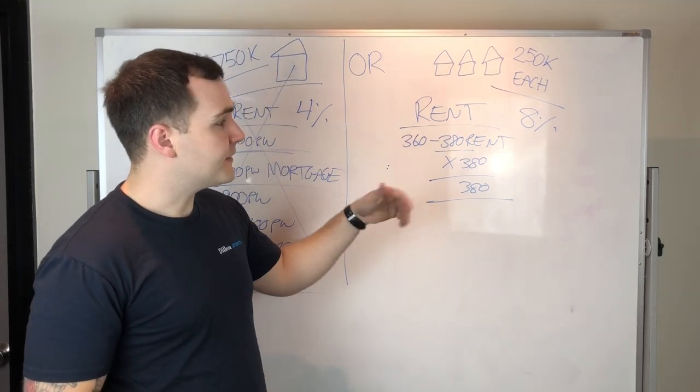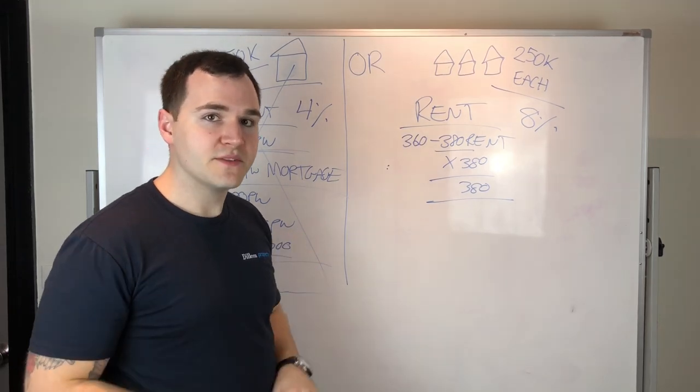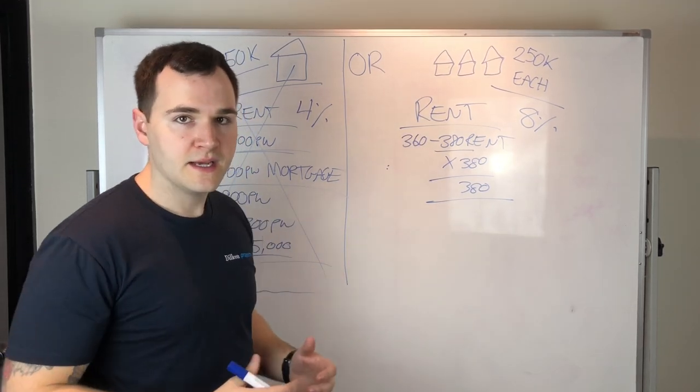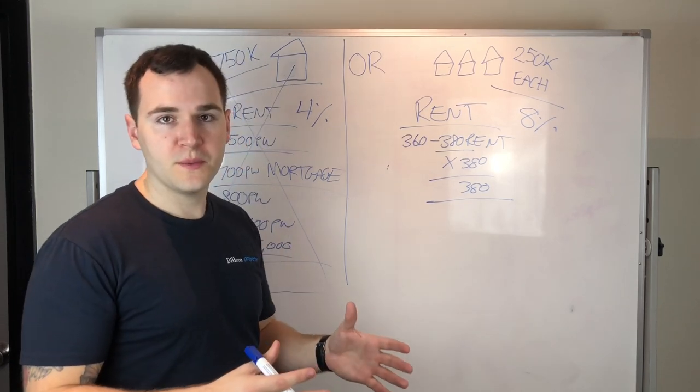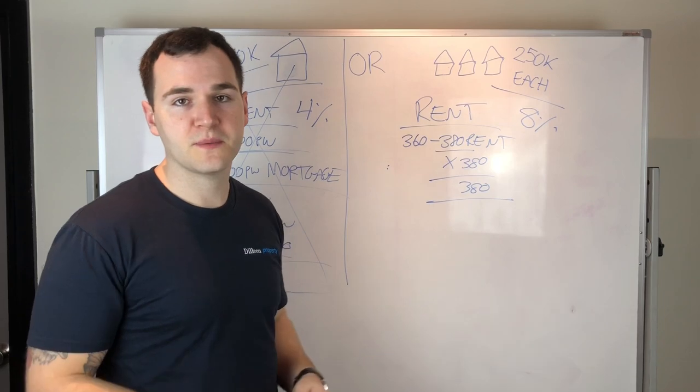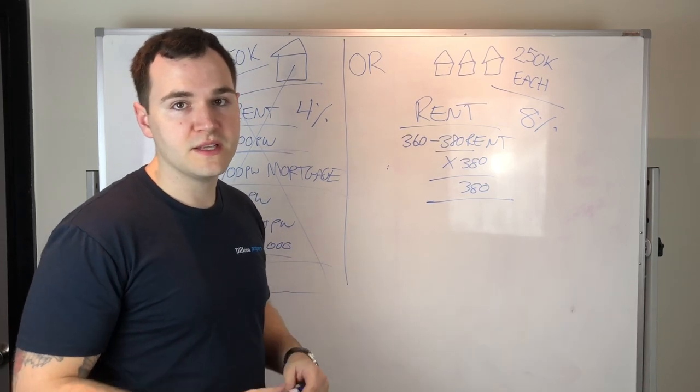So you've got three properties, they're looking after themselves and the biggest thing, if you want to build a portfolio, you want to get to 5, 10, 15 properties. I've got 14 in my portfolio at the moment, I just turned 27, so I want to hit 20, 30 properties by the time I'm 30, which is very achievable.